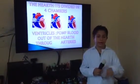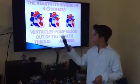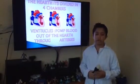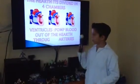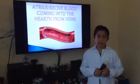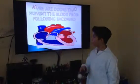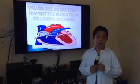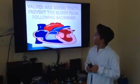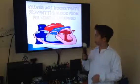The heart is divided into four chambers. Ventricles pump the blood out of the heart through the arteries. Atria receive the blood from the veins. Valves are doors that prevent the blood from falling backward through the veins.